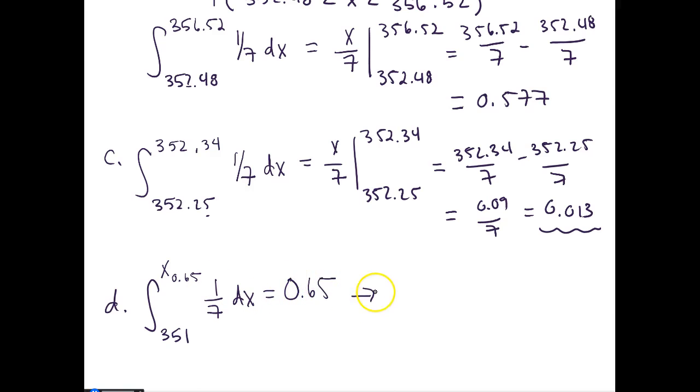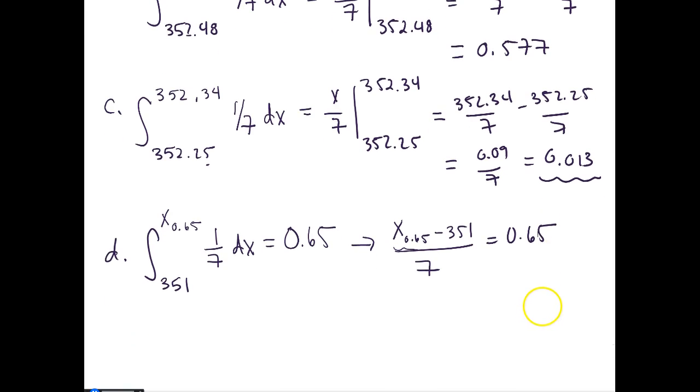This equals (x_0.65 - 351) / 7, where x_0.65 is what we're trying to find, the 65th percentile value. If we integrate this, this equals 0.65. So this is then equal to 7 times 0.65 plus 351. That is going to be the cutoff value, which equals 355.55.